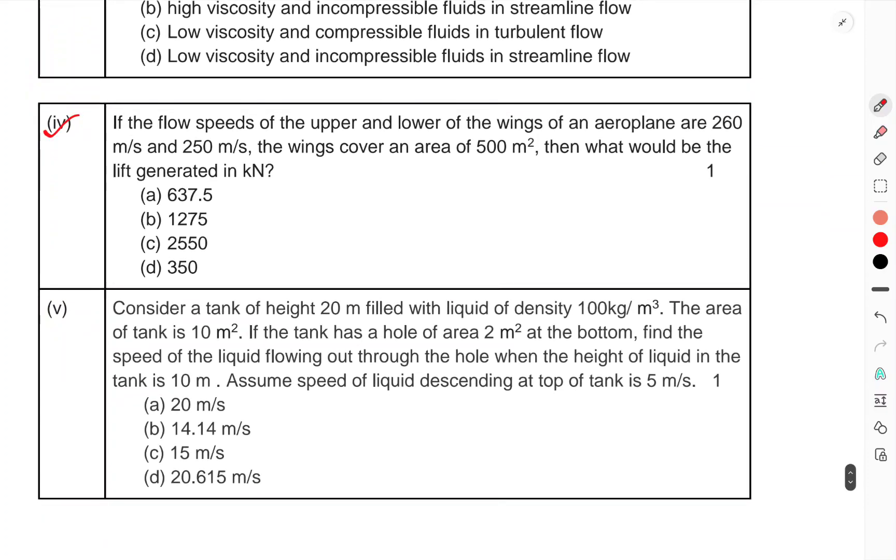Question 4: The flow speed of the upper and lower wings of the aeroplane are 260 m/s and 250 m/s. The wings cover an area of 500 m². What would be the lift generated in kN?